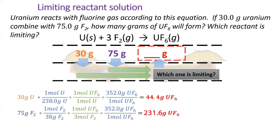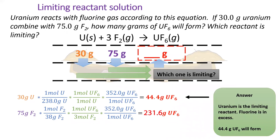Now convert 75 grams of fluorine to grams of uranium hexafluoride using the same method. In this case, we can make 694 grams. That's quite a bit more. This means the uranium will run out after only 44.4 grams of UF6 are made. Uranium is the limiting reactant and fluorine is in excess.